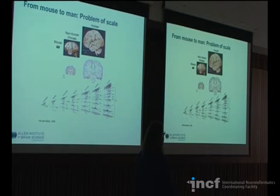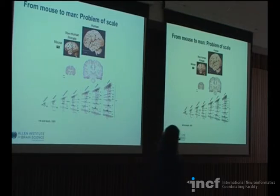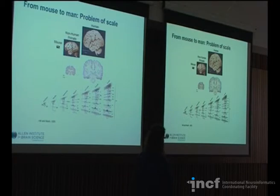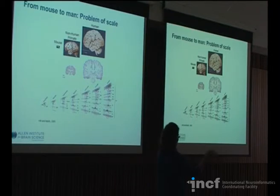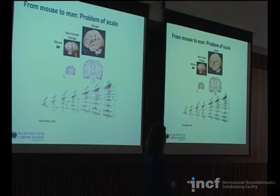A question came up about ISH measuring mRNA and how that relates to proteins. It doesn't always relate to proteins — we have not necessarily looked to see what that ratio is. In some cases it will be reflective of what the proteins are going to be, but we have seen cases where it doesn't.